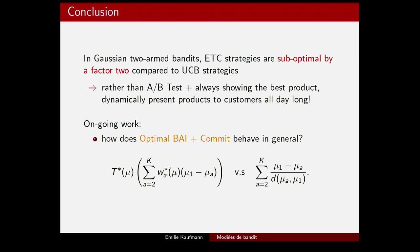To conclude on ETC algorithms: in the simple case of Gaussian two-armed bandits, ETC strategies are at least twice worse than the best possible UCB algorithm. The practical message for A/B testing is: rather than running an A/B test phase and always presenting the best product afterward, you should use UCB with your two products throughout. This needs to be extended to bandit models with more arms, where it's not easy to see how an optimal best arm identification followed by exploitation compares to an optimal regret-minimizing algorithm.